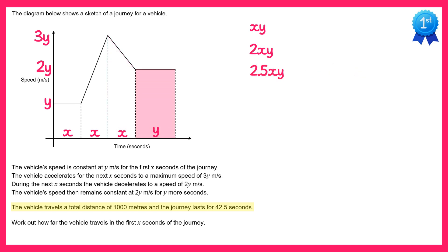And on to the final section, this one is 2y by y which is 2y squared. So if we add all of these together we get the total area which is equivalent to the total distance travelled.